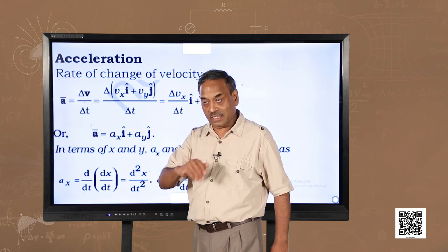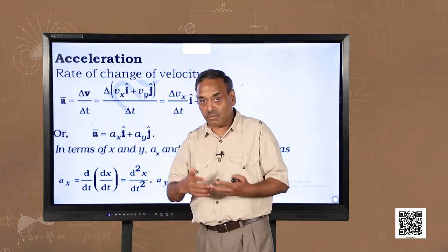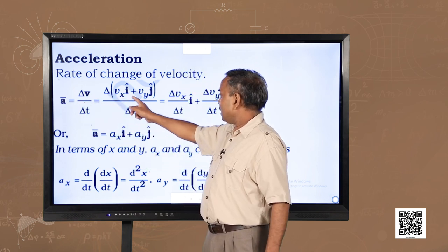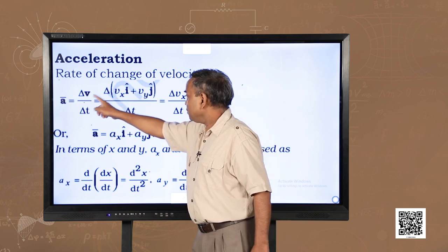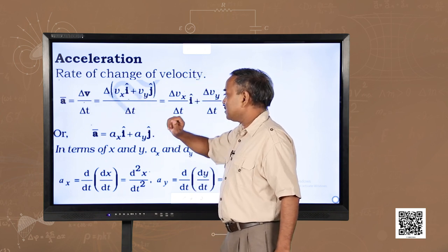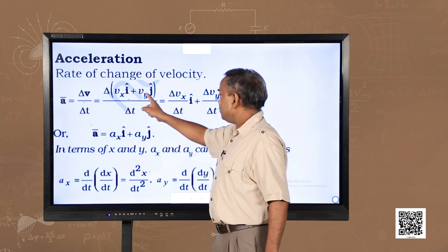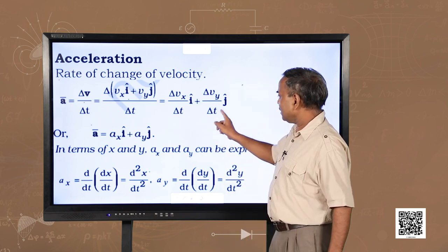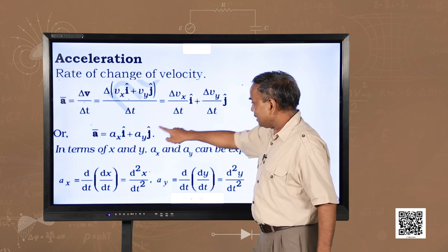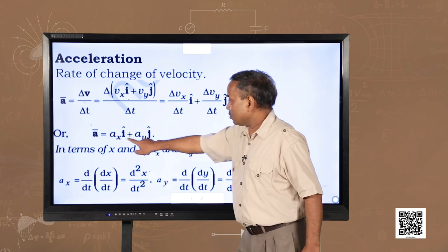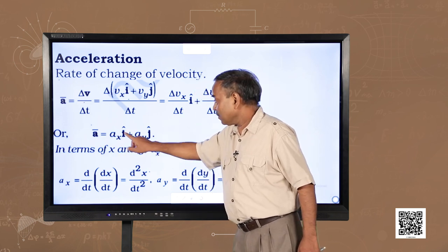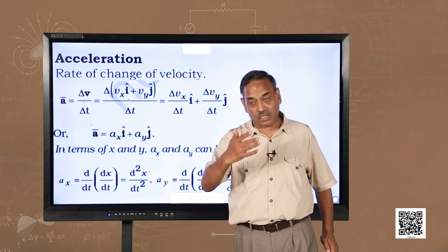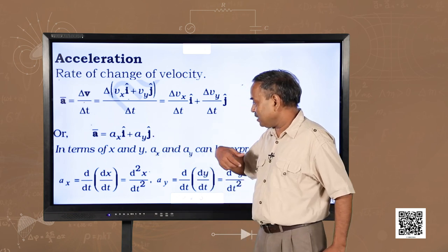So uniform acceleration — delta v by delta t equals v_x i plus v_y j. Now I can resolve it: v_x and v_y are just the scalar components, while i and j are the vector quantities. So I can rewrite it as delta v_x over delta t and delta v_y over delta t — that is, acceleration along the x-axis and acceleration along the y-axis. The acceleration vector can be rewritten as resolved components along x and y directions. Had this been in three-dimensional space, a third component a_z k would also appear.